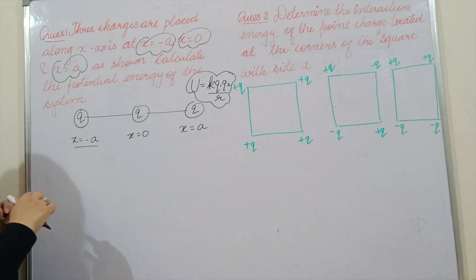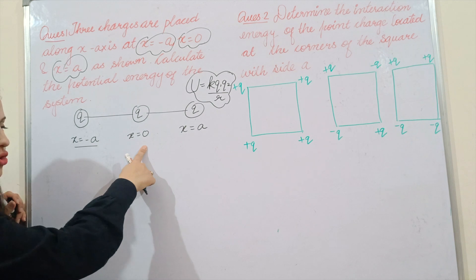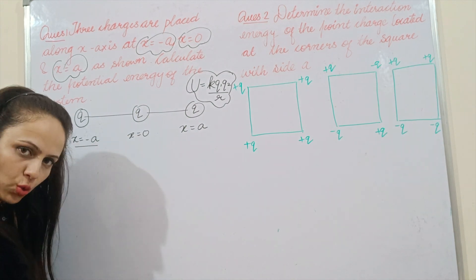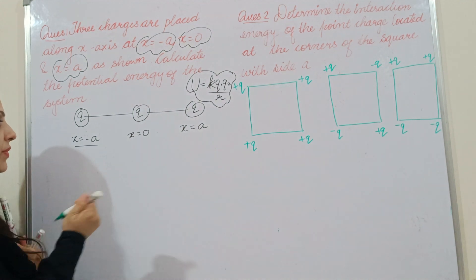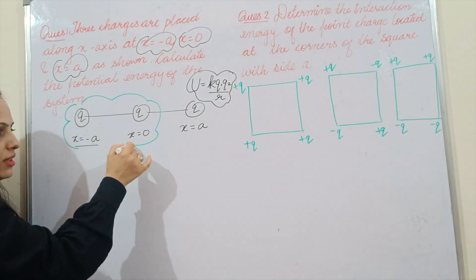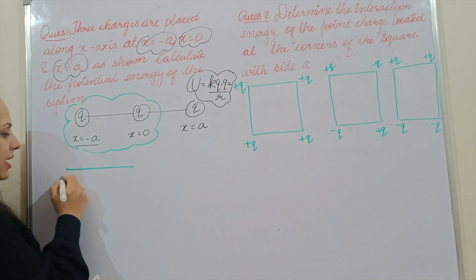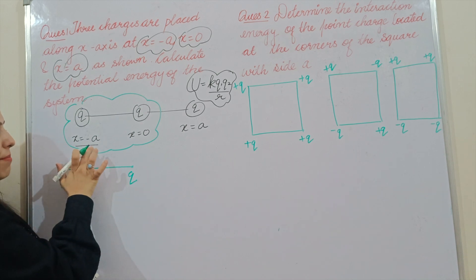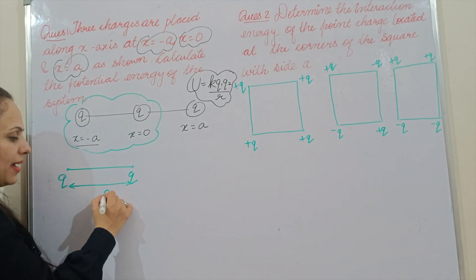Let's start. We have charges at positions -a, 0, and +a. All charges are equal to Q. We form pairs. The first pair is the charge at -a and the charge at 0. The distance between them is equal to a.